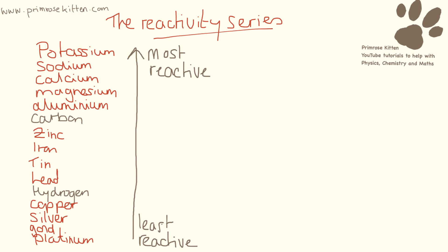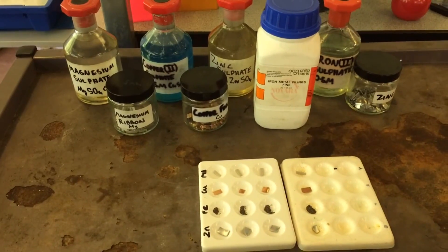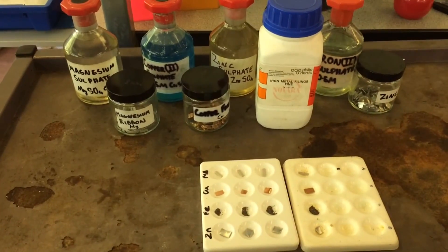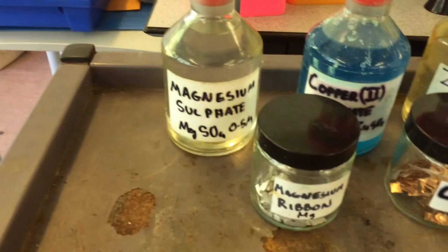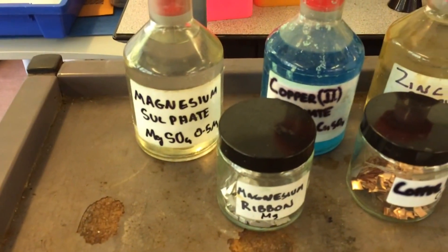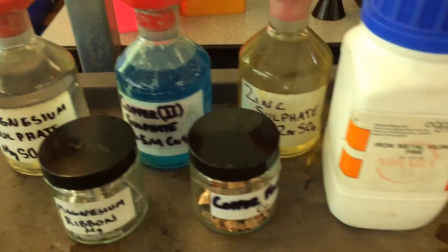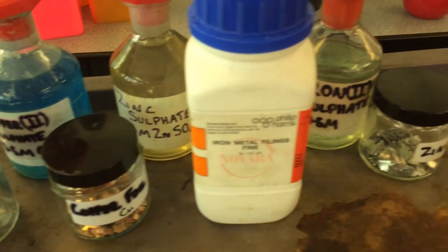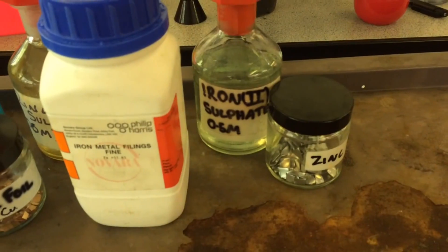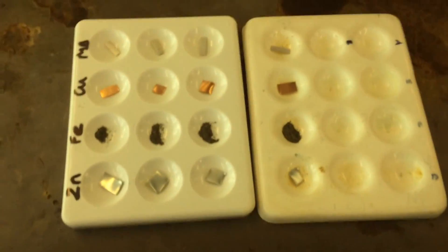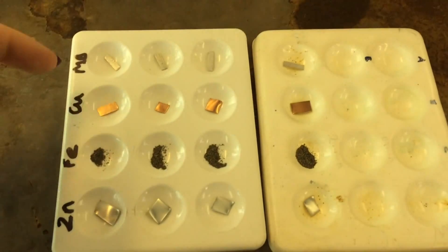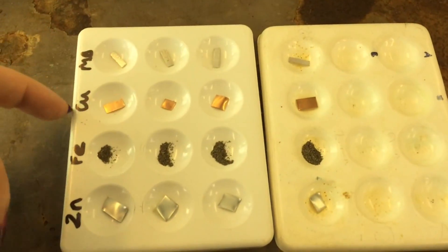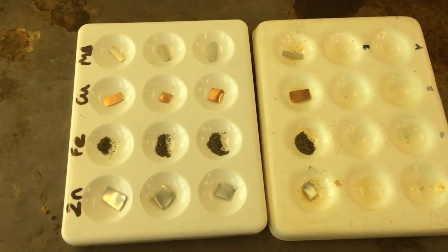We can use this reactivity series to do a few experiments and see what happens when we mix things up. We're going to be looking at the reactivity of metals. We have magnesium ribbon, magnesium sulphate, copper, copper sulphate, zinc, zinc sulphate, and iron and iron sulphate. I've just laid them out here — magnesium, copper, iron and zinc.